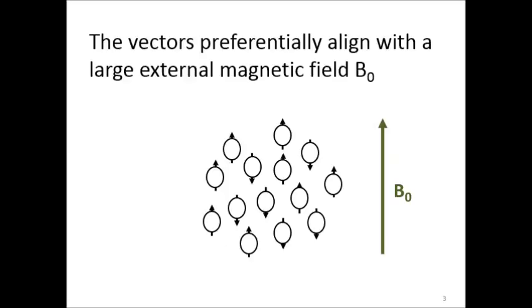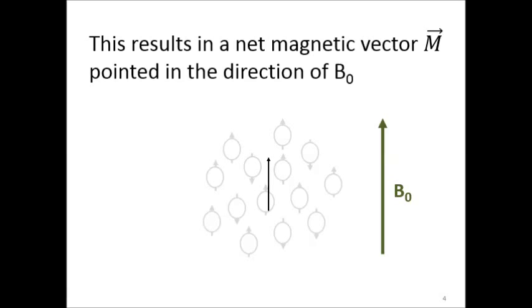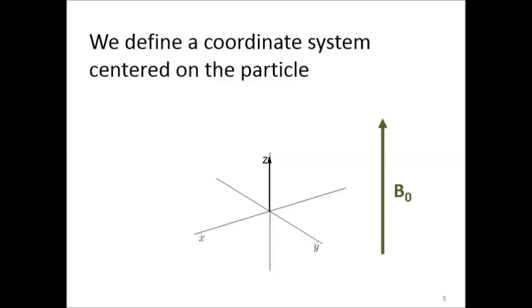However, we can place this particle in a large external magnetic field, B0, and when we do, the magnetic vectors of the particles align with that field, either parallel to it or anti-parallel to it, and they preferentially align in the parallel direction. The result is a net magnetic vector in the direction of the external magnetic field, B0.